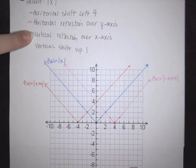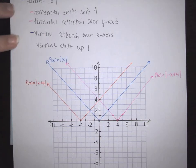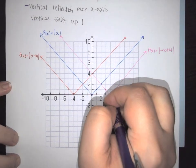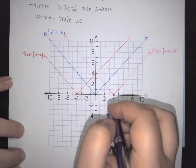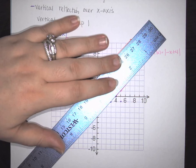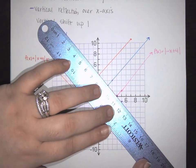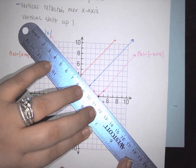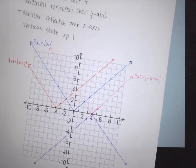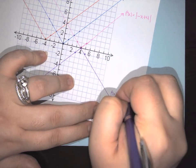Now we apply the vertical reflection — reflecting over the x-axis — drawn in purple. We stay at the same horizontal point at four, but now the V-shape opens downward instead of upward. This gives us f of x equals negative absolute value of negative x plus four.